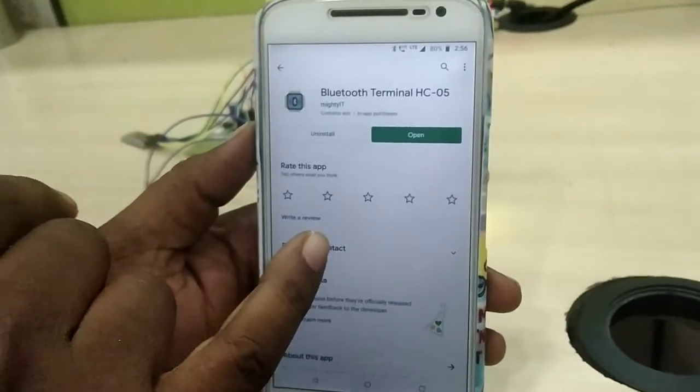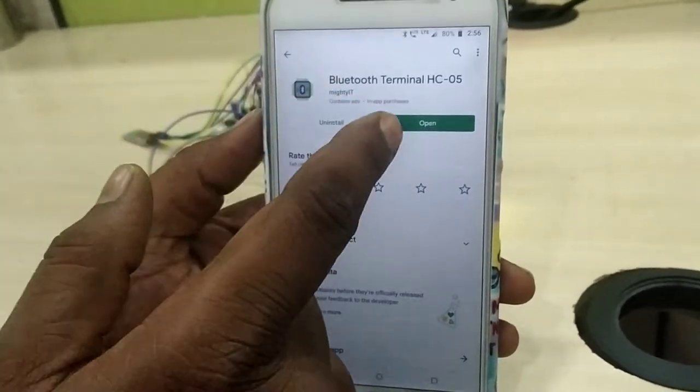You will get some list of applications which are freely available. Just select your Bluetooth Terminal HC05 app. In this mobile which is already installed. If you are new, try to install this app.